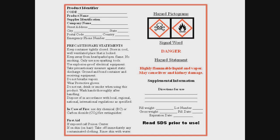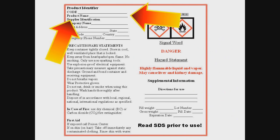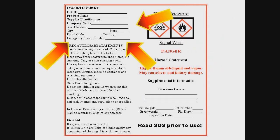Other items required to be on GHS labels include precautionary statements — phrases that describe recommended measures to minimize or prevent adverse effects resulting from exposure to a hazardous chemical or improper storage or handling. The precautionary statements would be the same on the label and on the safety data sheet for the product. The product identifier is how the hazardous chemical is identified — this can be the chemical name, code number, or batch number. The same product identifier must appear both on the label and in section 1 of the safety data sheet. The supplier identification — name, address, and telephone number — must also be provided on the label.